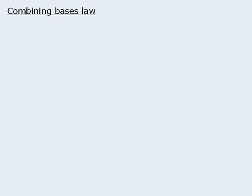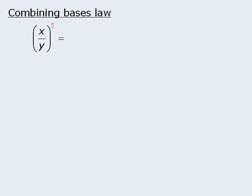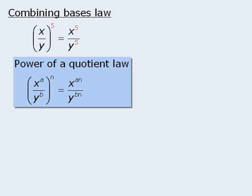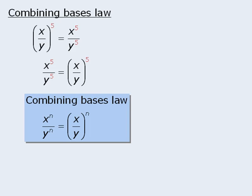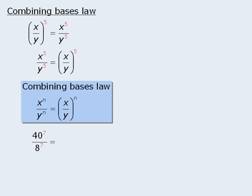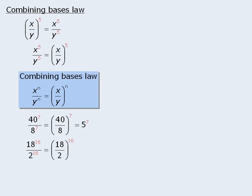The next law is very similar to the previous one. This law involves division, but the principle is the same. To simplify this expression, we can apply the power of a quotient law to get x to the power of 5 divided by y to the power of 5. This means we can take x to the power of 5 divided by y to the power of 5 and rewrite it as x divided by y all to the power of 5. To generalize, if we have a quotient where the two exponents are equal, we can rewrite this as the quotient of the two bases all to the power of that exponent. Note that the exponents must first be equal before we can combine the bases. For example, we can rewrite this as 40 over 8 all to the power of 7, which equals 5 to the power of 7. Similarly, we can rewrite 18 divided by 2 all to the power of 16, which equals 9 to the power of 16.